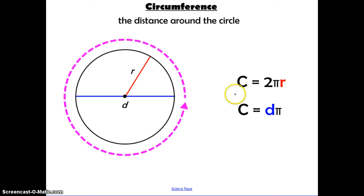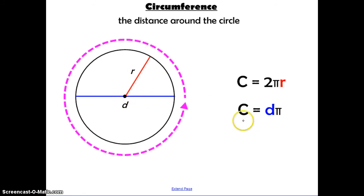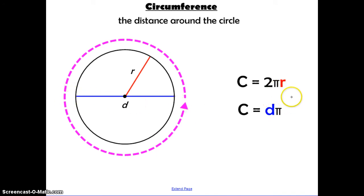We're given two formulas — both are on your SOL formula sheet. Circumference is equal to 2 times pi times R, where R is the radius. Or, circumference is equal to diameter times pi, where D is the diameter. Both formulas are equivalent because 2 times the radius is equal to the diameter.